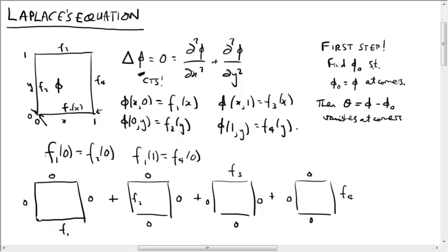So once we've done that, the boundary conditions will have changed. The boundary conditions are f1 minus phi_0 along (x, 0), and f2 minus phi_0 along (0, y), and another two conditions. So all of these get reduced by a phi_0.